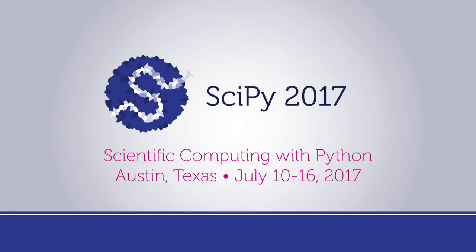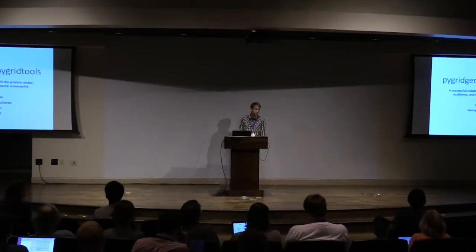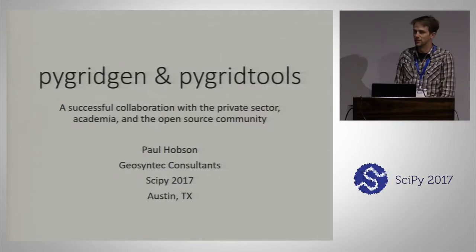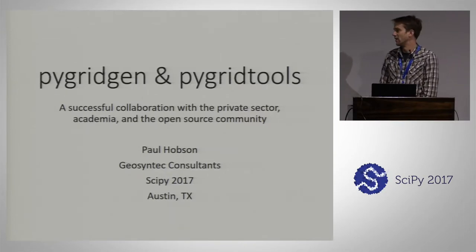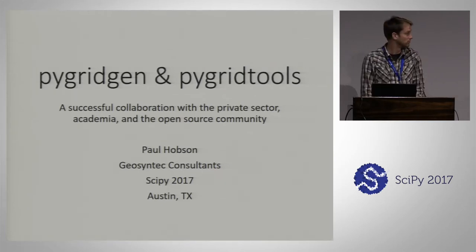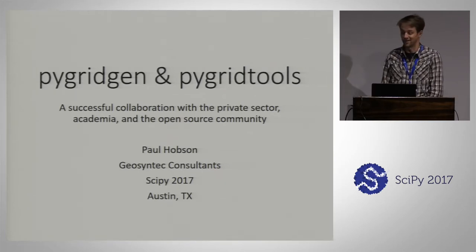My name is Paul Hobson. I work for an environmental consulting firm called Geosyntec Consultants in Portland, Oregon. We've got offices all over the country. I'm a water resources engineer there. I'm not a trained programmer — I'm a civil engineer. I learned MATLAB in college and Matplotlib got me into Python. This is my first SciPy. Everything's been great. Thanks for having me.